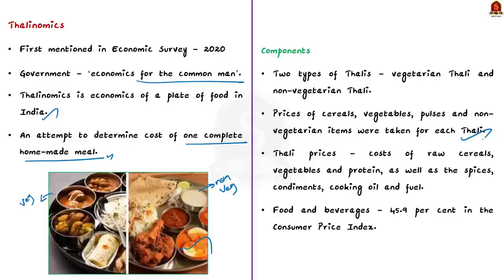The thali prices included the cost of cereals, vegetables, proteins, as well as spices, condiments, cooking oil and the fuel needed to prepare the meal. So the price arrived at in thalinomics is inclusive of all items needed to prepare the thali.